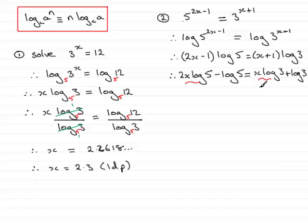So if I now take away x log 3 from both sides, I'm going to get 2x log 5 minus x log 3 equals. So if I add log 5 to both sides, I'm going to have log 3 plus log 5. So log 3 plus log 5. So always do that. Bring the x terms to one side and take all the other log terms to the other side.